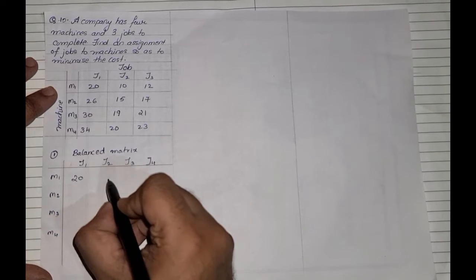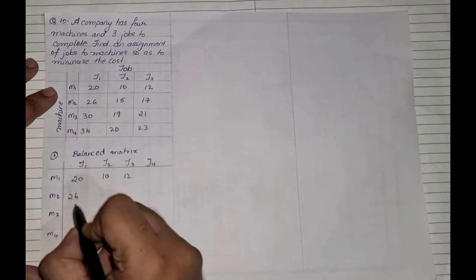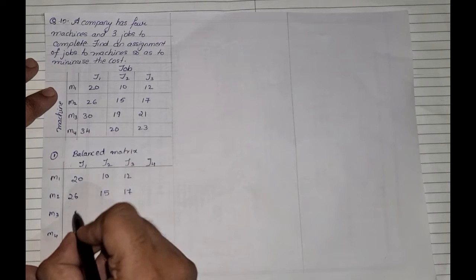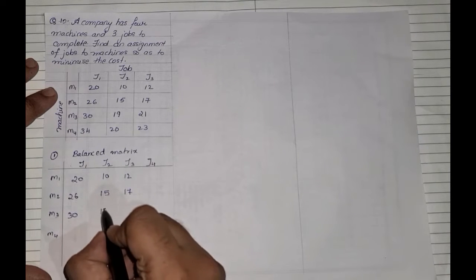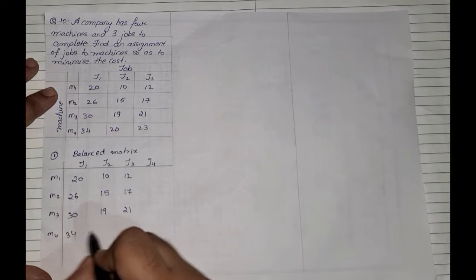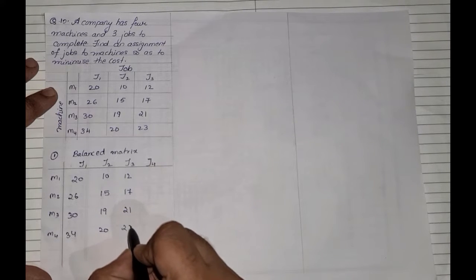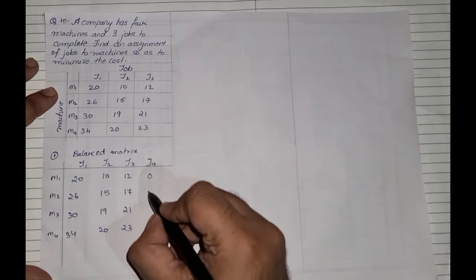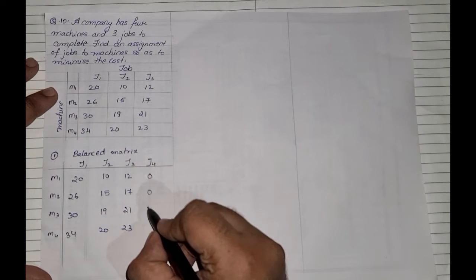We note all the original values as they are: 20, 10, 12, 26, 15, 17, 30, 19, 21, 34, 20, and 23. For the dummy column J4, all values will be 0, since this job is not in existence — we add it only to make the matrix balanced.